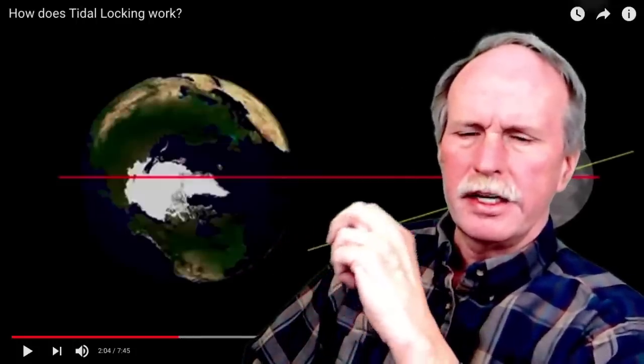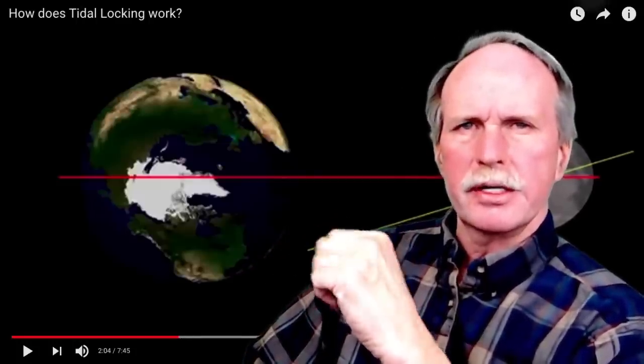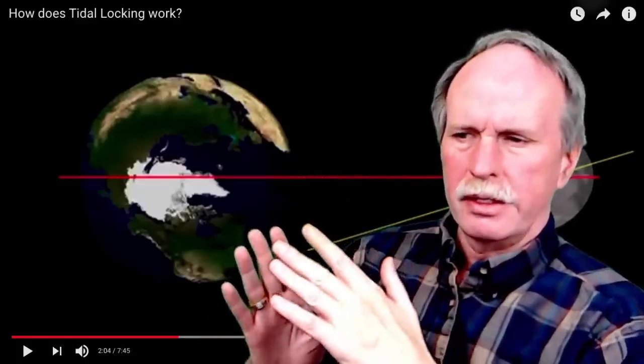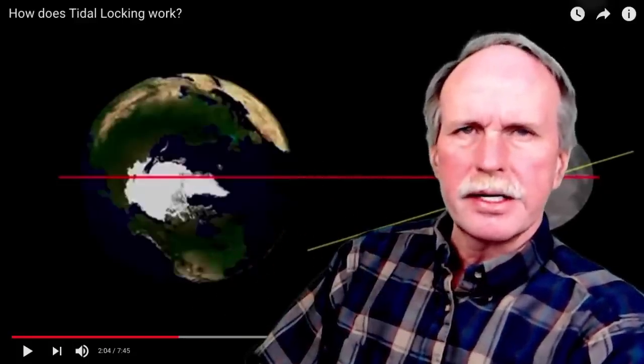So the effect of gravity on the moon is one, to slow its rotation, and two, to increase the radius of its orbit. Now the result of this over time means that the moon becomes tidally locked to the Earth, which means that the same face of the moon is always pointing at the Earth.